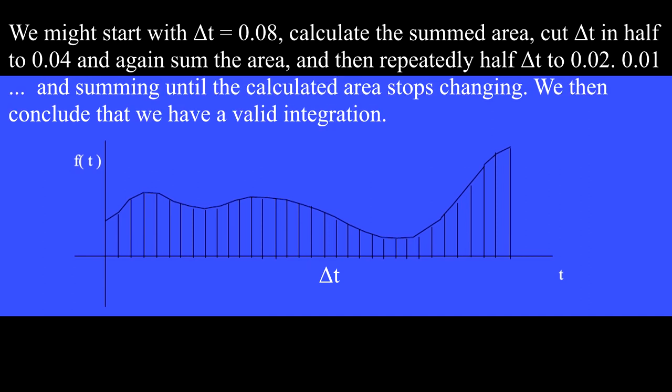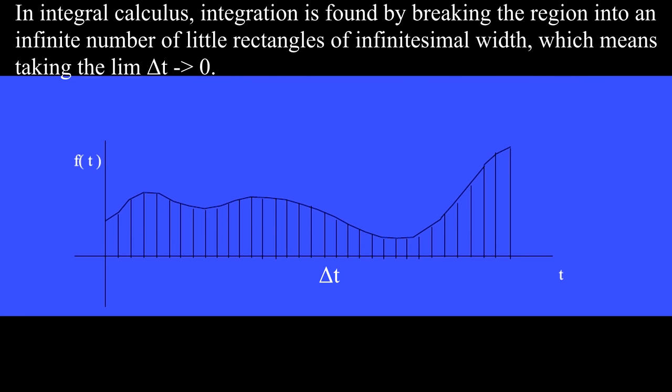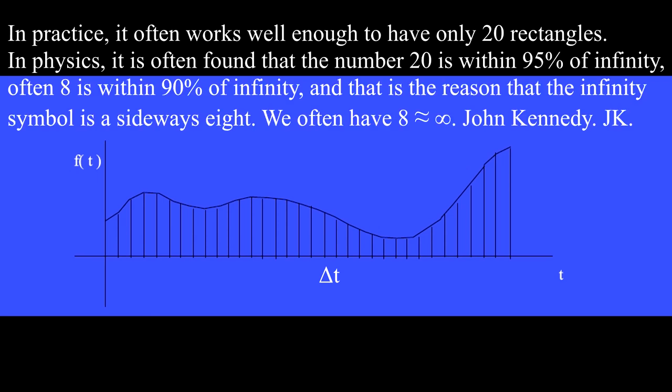We might start with delta t equal 0.08, calculate the summed area, cut delta t in half to 0.04, and again sum the area, and then repeatedly half delta t to 0.02, 0.01, and so on, and summing until the calculated area stops changing. We then conclude that we have a valid integration. In integral calculus, integration is found by breaking the region into an infinite number of little rectangles of infinitesimal width, which means taking the limit as delta t goes to 0. In practice, it often works well enough to have only 20 rectangles.